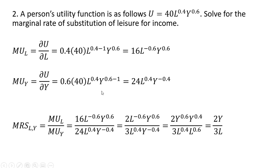For the marginal utility of income, we take the partial derivative with respect to income. The 0.6 moves down in front, so 0.6 times 40. We subtract 1 from the exponent on the y term: 0.6 minus 1 gives y raised to the minus 0.4 power. The 0.6 times 40 gives us 24. Setting up our MRS formula as the marginal utility of leisure divided by the marginal utility of income and simplifying: 16 divided by 24 is 2/3. Moving l to the minus 0.6 into the denominator and y to the minus 0.4 into the numerator, then adding exponents, gives us MRS = 2y divided by 3l.